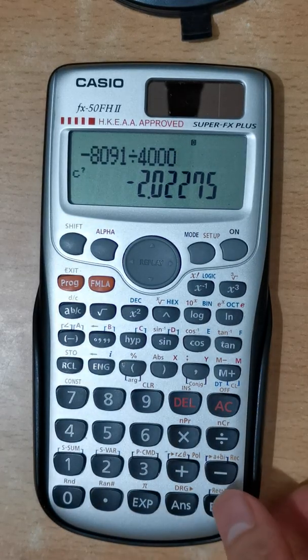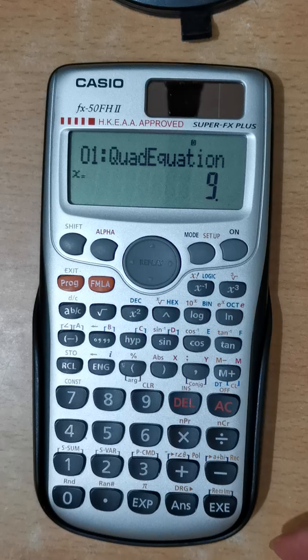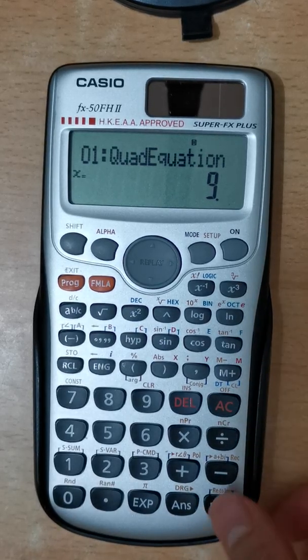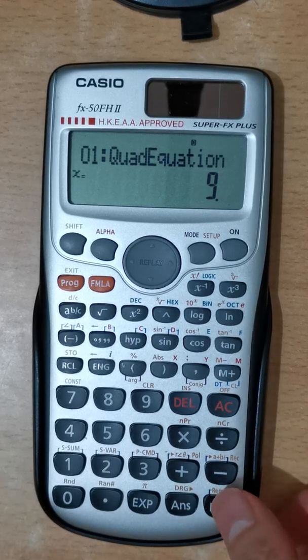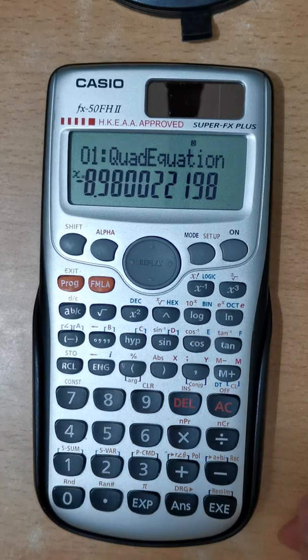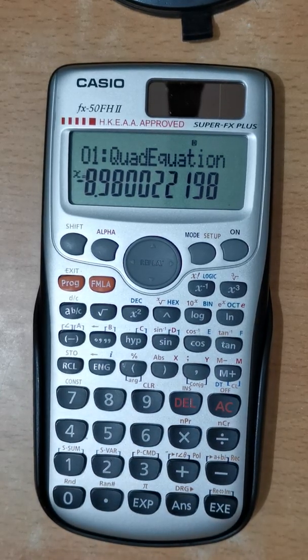You'll get the two quadratic roots. One is 9 meters per second, which is rejected because there's no change. The other one will be the desired answer.